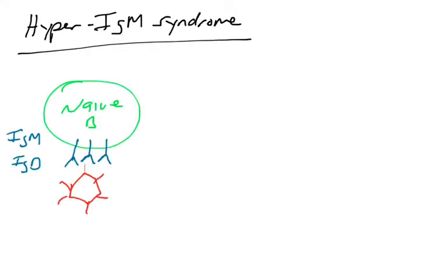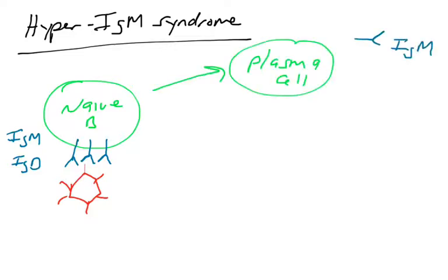It's going to require us to remember that for naive B cells, they express IgM and IgD on their surface. And when they recognize a pathogen, naive B cells undergo clonal selection, clonal expansion, and some population of naive B cells will differentiate into plasma cells and begin secreting low-affinity IgM.